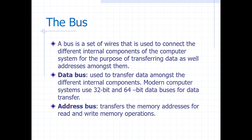Apart from the system bus we're going to look at, we also have the data bus. The main function of the data bus is to transfer data amongst the different internal components of the computer. The data bus can be determined by the width — that's why we started with the 4-bit data bus, then 8-bit, 16-bit, 32-bit, and 64-bit.